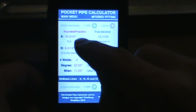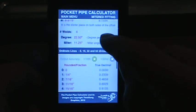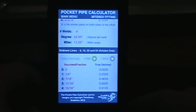I'll give a rounded fraction. I also give the true decimal for you on your B dimensions the same way. Number of welds you're going to have in this fitting is four. The degree is twenty two and a half so your miters are eleven and a quarter.